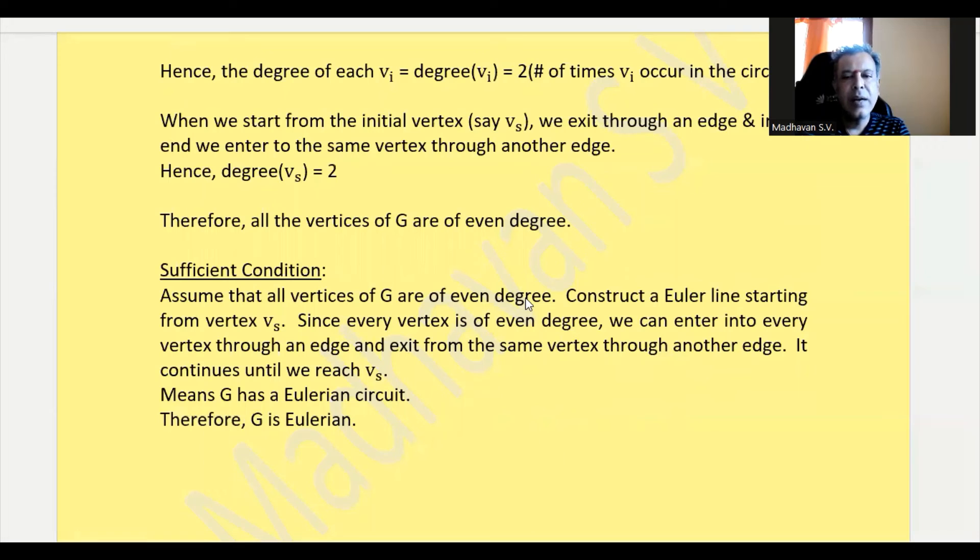If we start constructing a Euler line starting from vertex vs, since every vertex is of even degree, we can enter into every vertex through an edge and exit from the same vertex through another edge. It continues till we reach vs, the start vertex, meaning the graph will have an Eulerian circuit. Therefore, G is Eulerian.